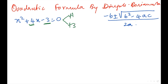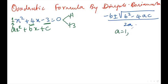Now let us begin with this sum. This is the equation of a quadratic — this is called a quadratic equation. In this question, what is my a? Here a is equal to 1, b is equal to 4, c is equal to negative 3.